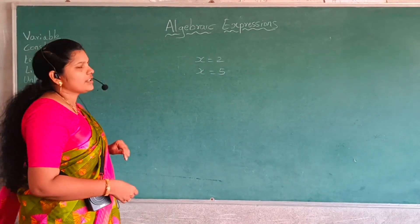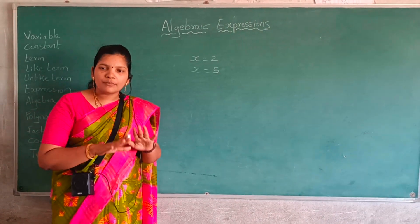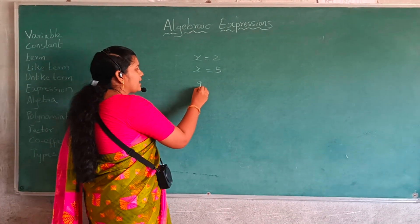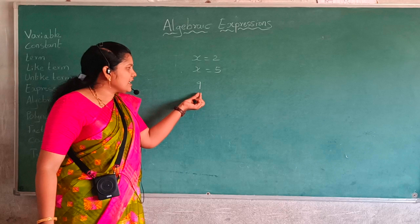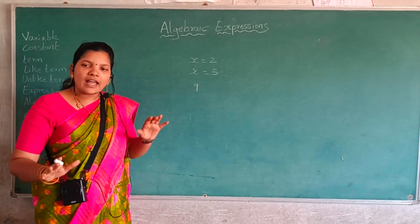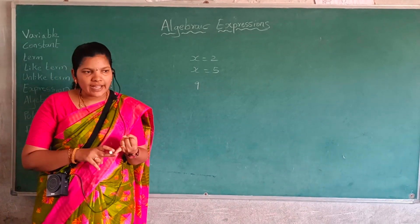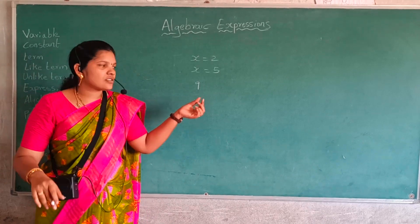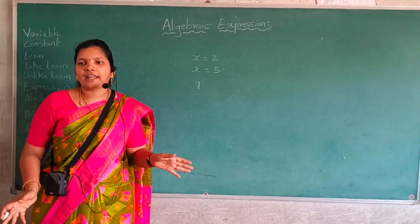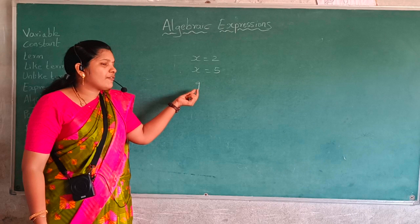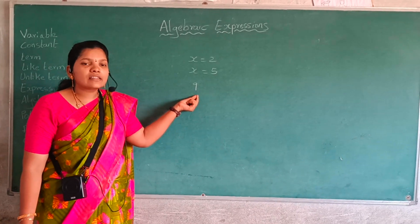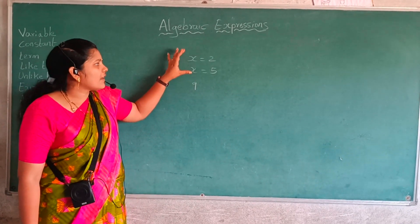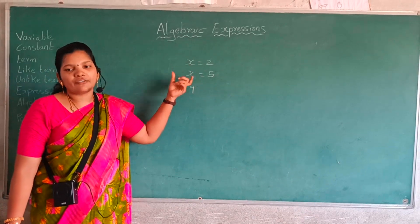And then what is constant? A constant is a symbol which has a fixed value. For example, 9. The number 9 has a fixed value — 9 is 9 itself. A fixed value is called a constant, and a changing value is called a variable.